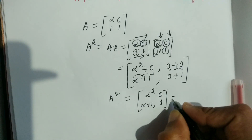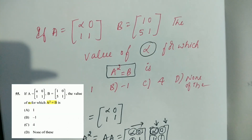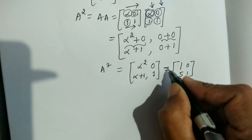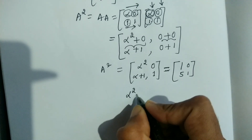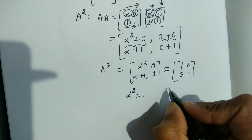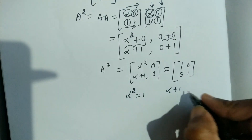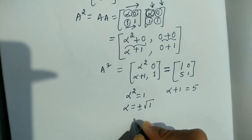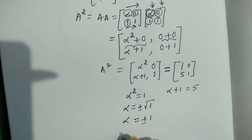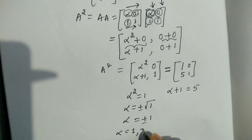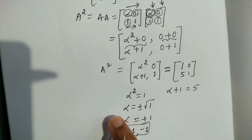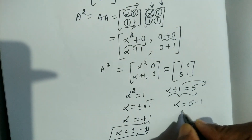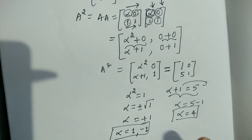Since A² = B, we have [α², 0; α+1, 1] = [1, 0; 5, 1]. Equating entries: α² = 1, so α = ±√1 = ±1, giving α = +1 or α = −1. Also from α + 1 = 5, α = 4. So we get three possible values.